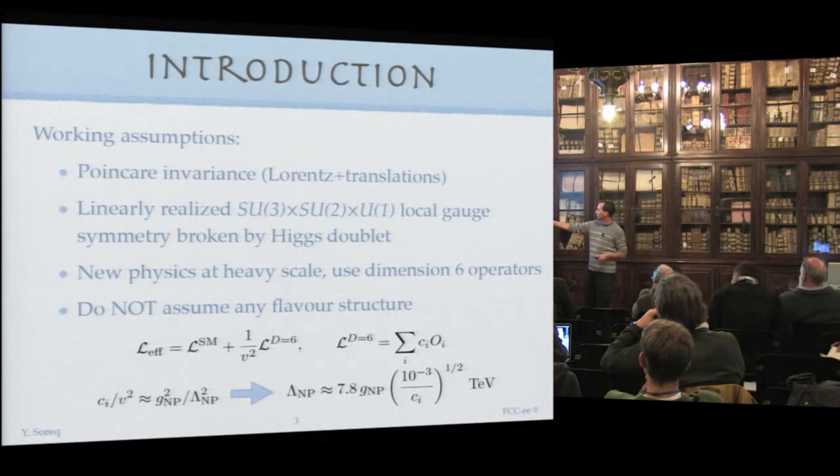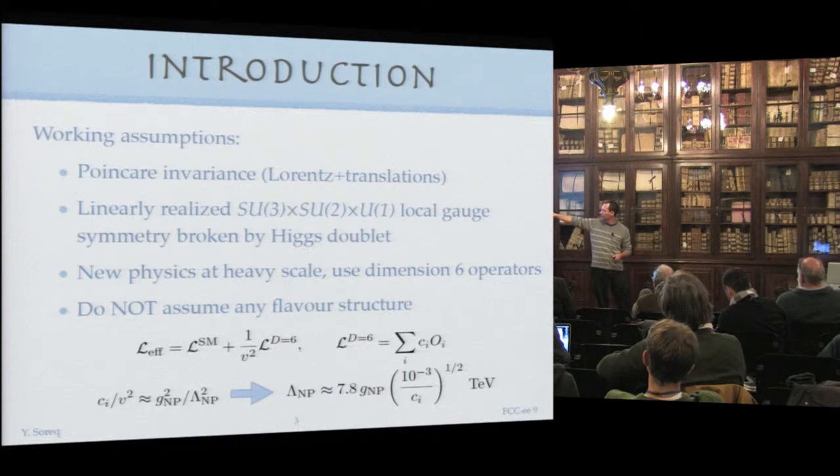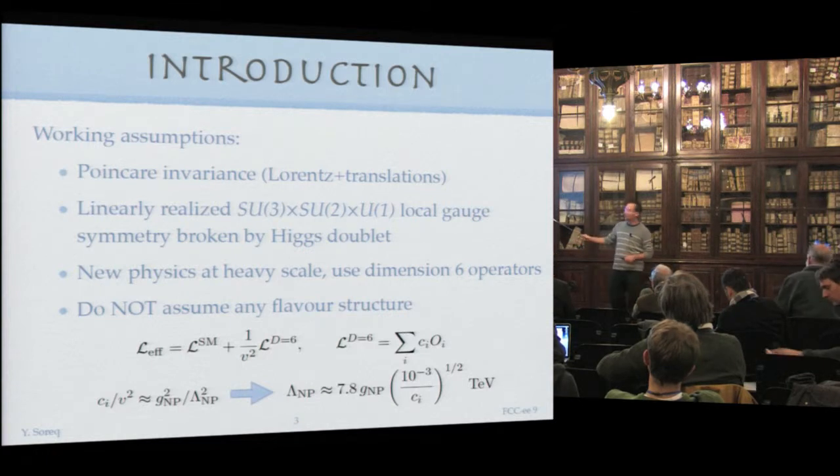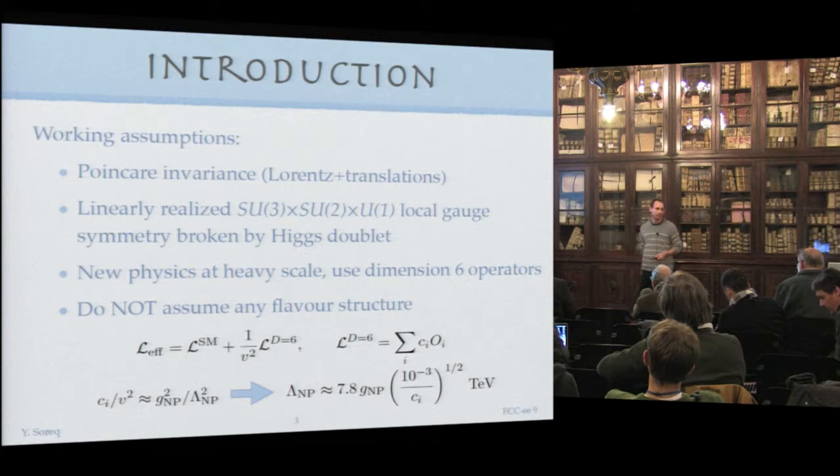This is our effective Lagrangian: the standard model plus a bunch of dimension six operators. For convenience, the scale we put here is the Higgs vev V squared. C is dimensionless and O are our operators. If we see bounds of C of order 10 to the minus three, it tells us we probe energy scales of roughly 10 TeV.